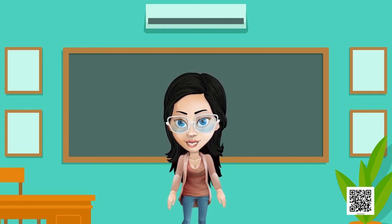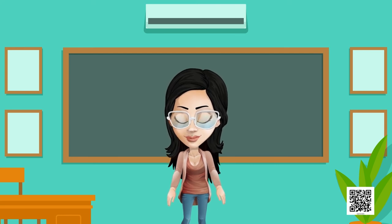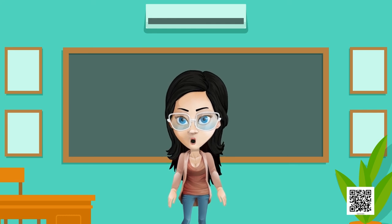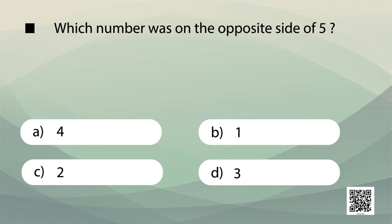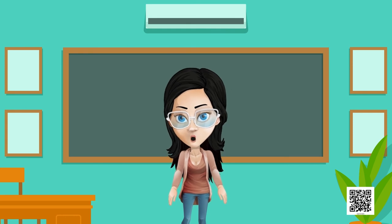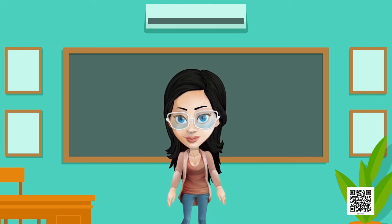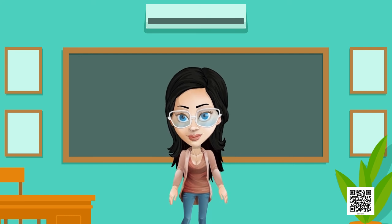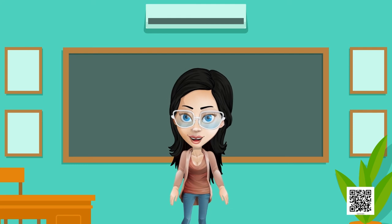Now look at the picture and answer questions, keeping in mind that the sum of numbers on opposite sides of a dice is always seven. First question: which number is on the opposite side of five — is it four, one, two, or three? The correct answer is two, because five plus two equals seven.